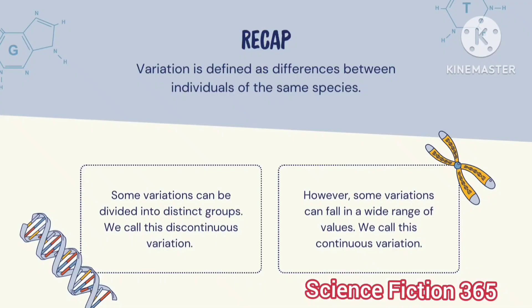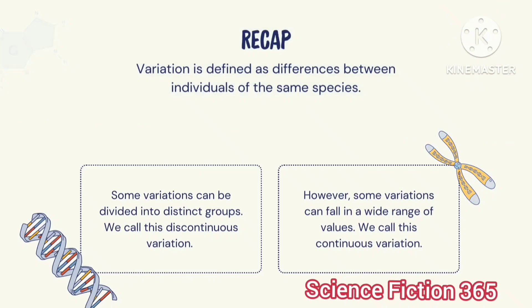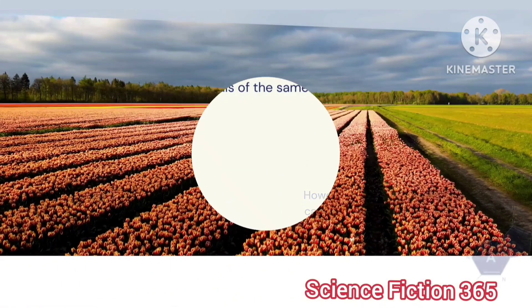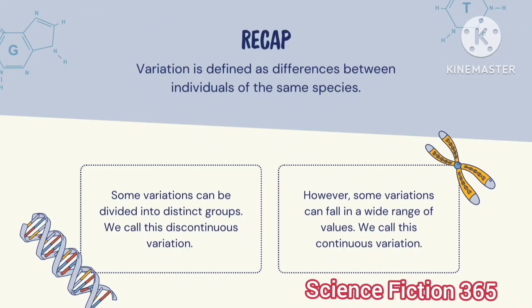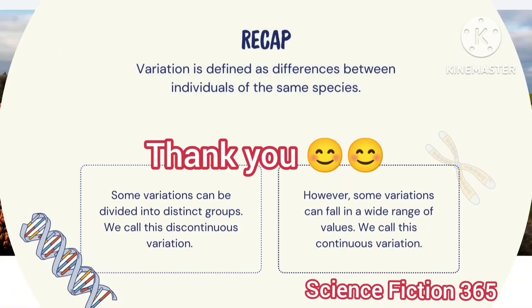Let's have a small recap. Variation is defined as the difference between individuals of the same species. Some variations can be divided into distinct groups — we call this discontinuous variation. Some variation can fall in a wide range of values — we call this continuous variation. That's all for today; I hope you found this video informative. Please like, share, and subscribe.